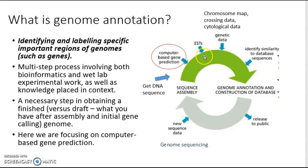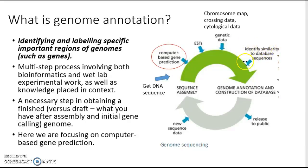You can apply other information to gene prediction, such as genetic data from cytological data, crossing, or recombination frequencies — that's done a lot in eukaryotes. You can take gene sequences identified by computer and look for similar or homologous sequences in online databases. You can also apply biological expertise, such as asking whether it makes sense to have that gene in a particular organism. That's how you get an annotated genome and construct a database, which should then be released to the public.